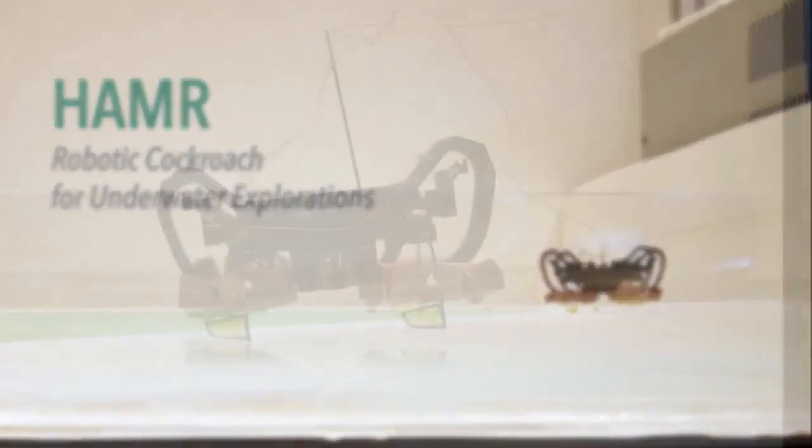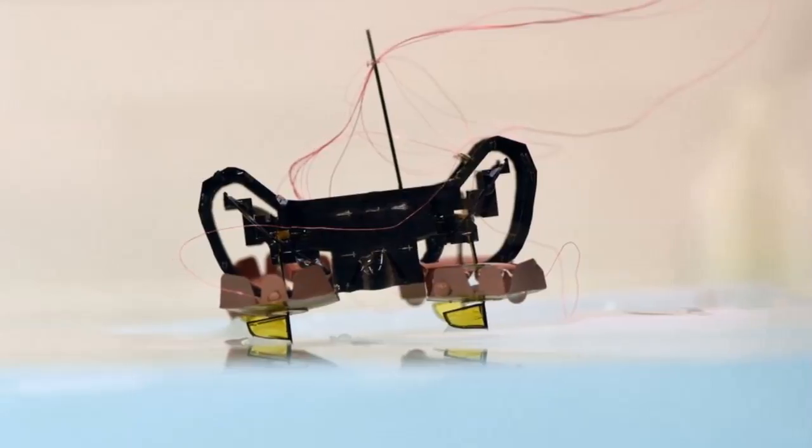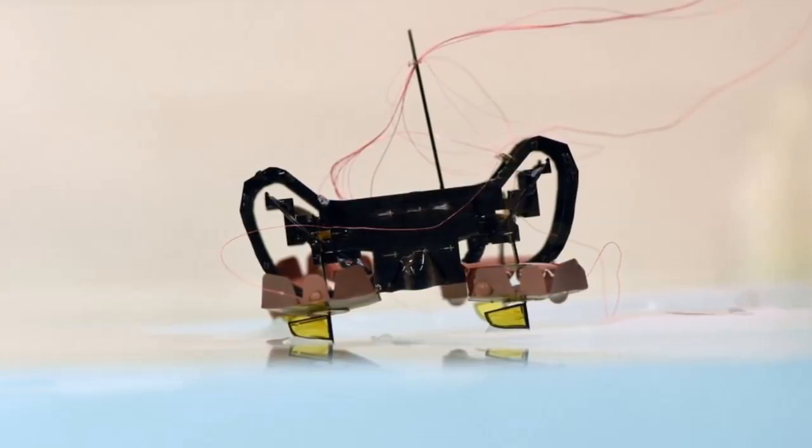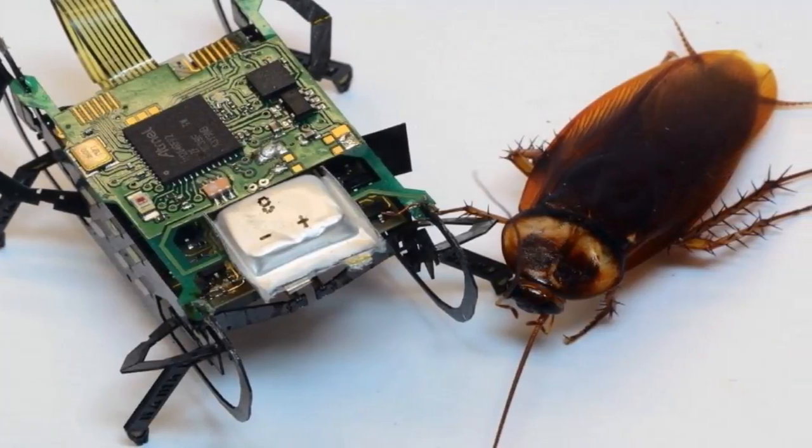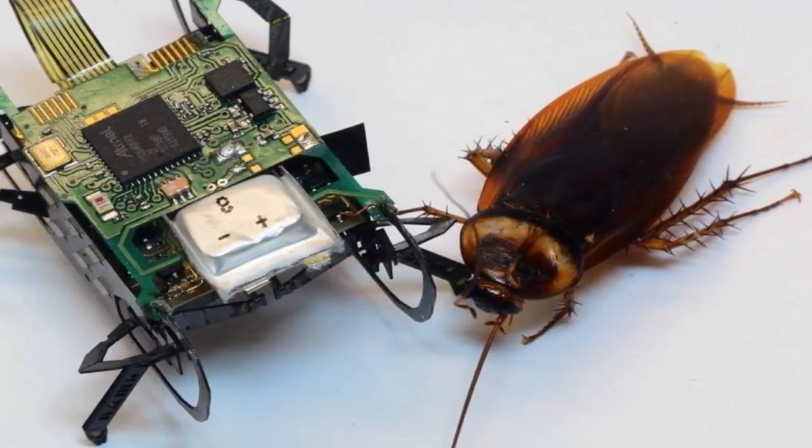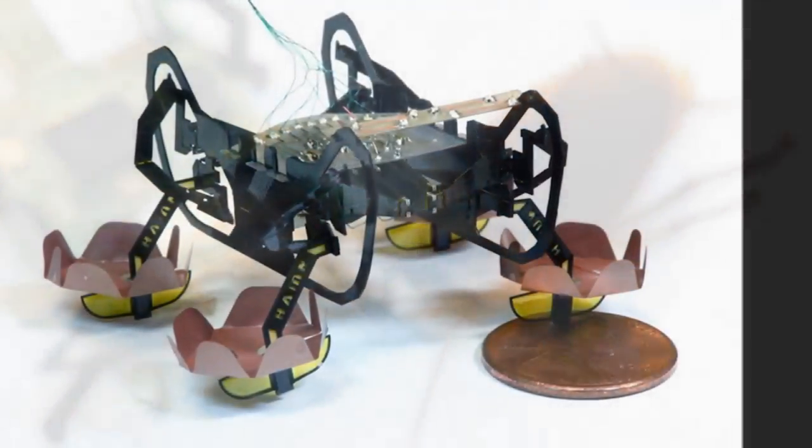With its electrowetting pads submerged and activated, the hammer can move across the surface of the water. With four pairs of asymmetric flaps and custom-built swimming gates, the hammer paddles in a manner that's similar to a diving beetle.